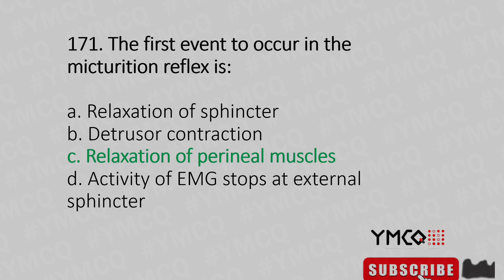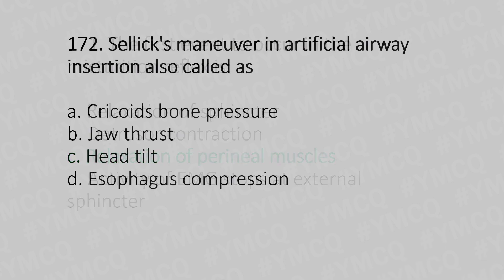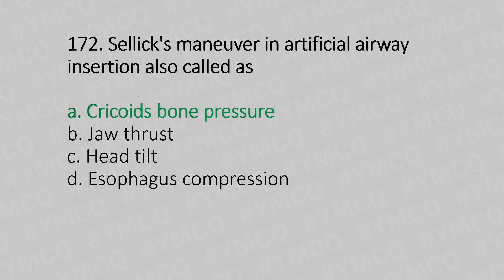Question 172: Sellick's maneuver for artificial airway insertion is also called — Option A: Cricoid bone pressure, Option B: Jaw thrust, Option C: Head tilt, Option D: Esophagus compression. And the answer is Option A, cricoid bone pressure.